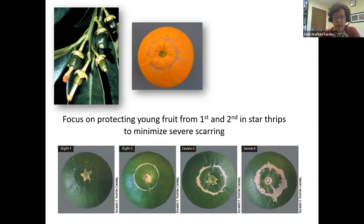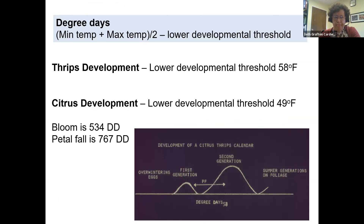All insects develop based on temperature — we call these degree days. You add the minimum and maximum temperature of the day and divide by two to get the average daily temperature. Thrips begin to develop when the average daily temperature is 58°F. In contrast, citrus trees have a lower developmental threshold of 49°F. So they're each developing at different rates and have different trigger thresholds at which they begin to develop.